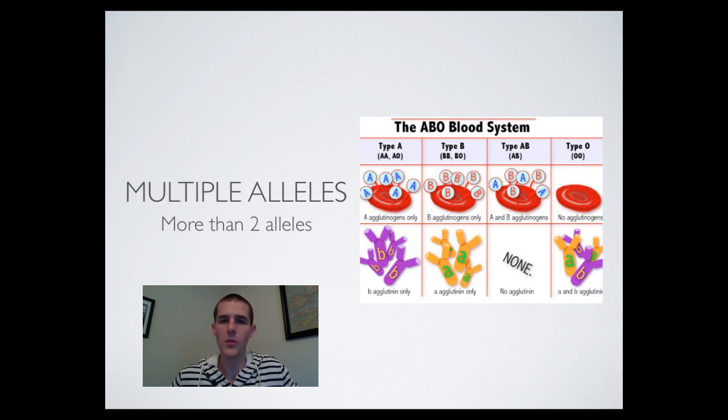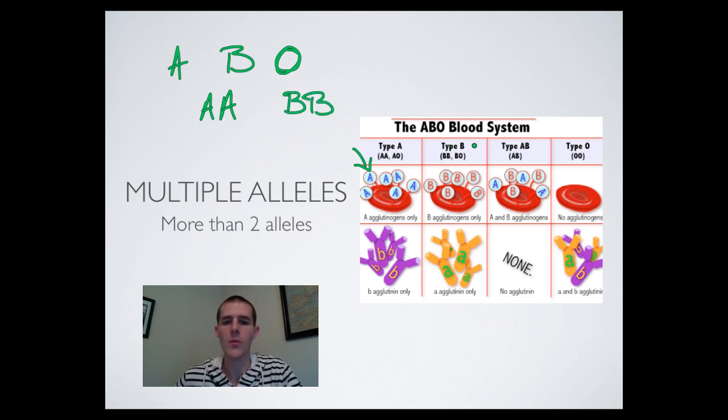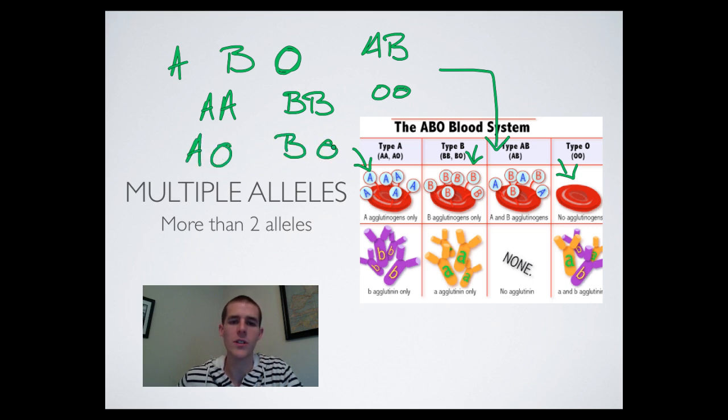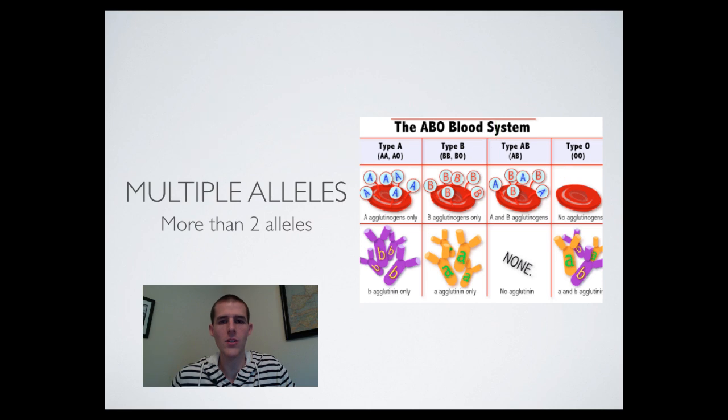Next situation to be aware of is called multiple alleles. The best example of this is blood type. For blood type, there are actually three alleles rather than the normal two. The alleles for blood type are A, B, and the recessive O. So if you get two A alleles, you end up with type A blood. If you get two Bs, you end up with type B blood. If you get two O's, you have got type O blood. And if you end up with an A and a B, you end up with type AB blood. Be aware that since this O is recessive, you can also have this situation which gives you type A blood and this situation which gives you type B blood. Recognize that for a trait like blood type, there are more than the common two alleles. In this case, there are three alleles that are coding for whatever trait is showing up in the individual.